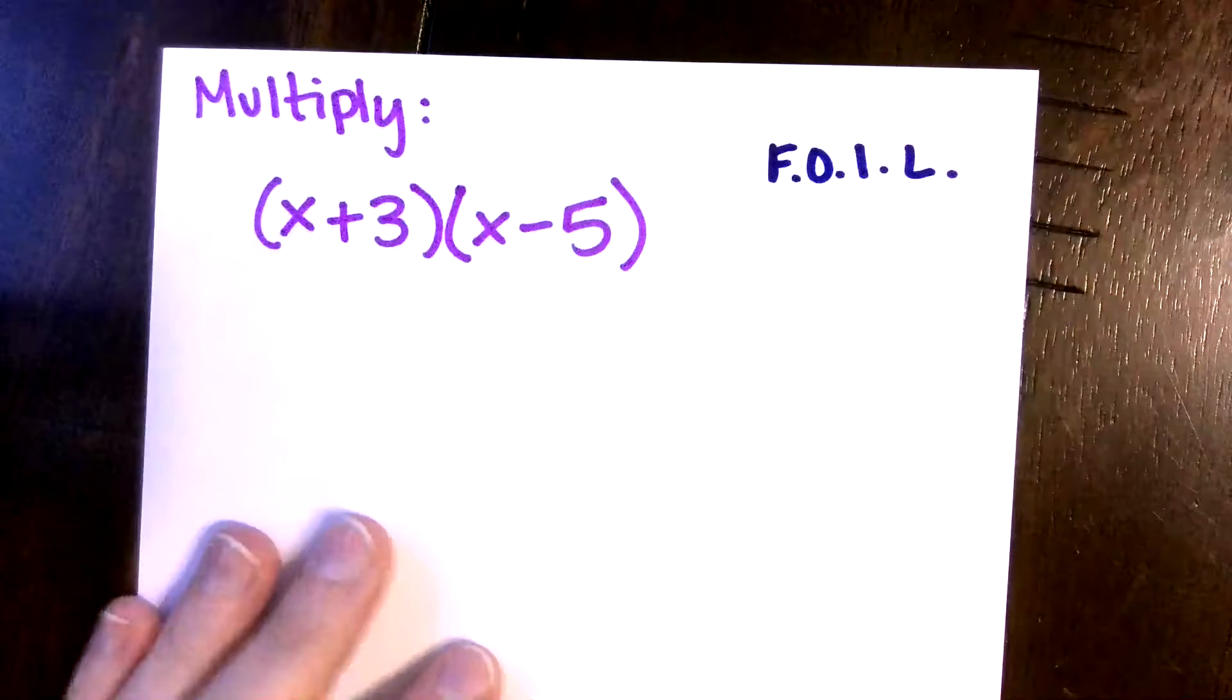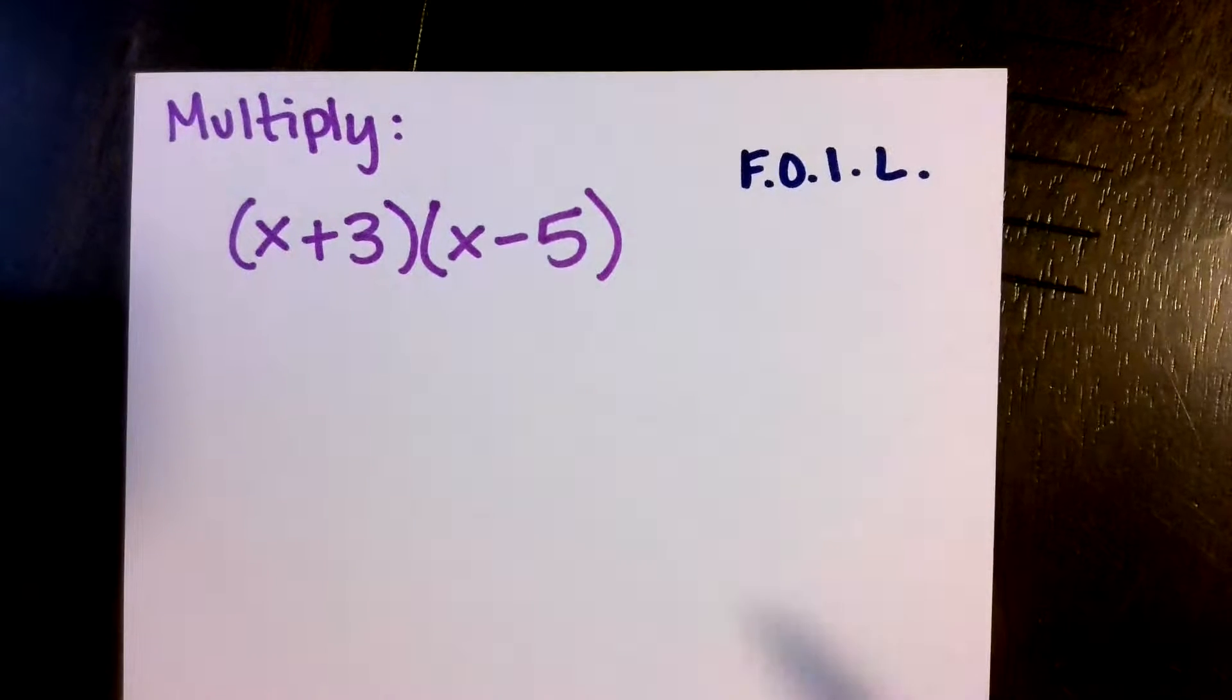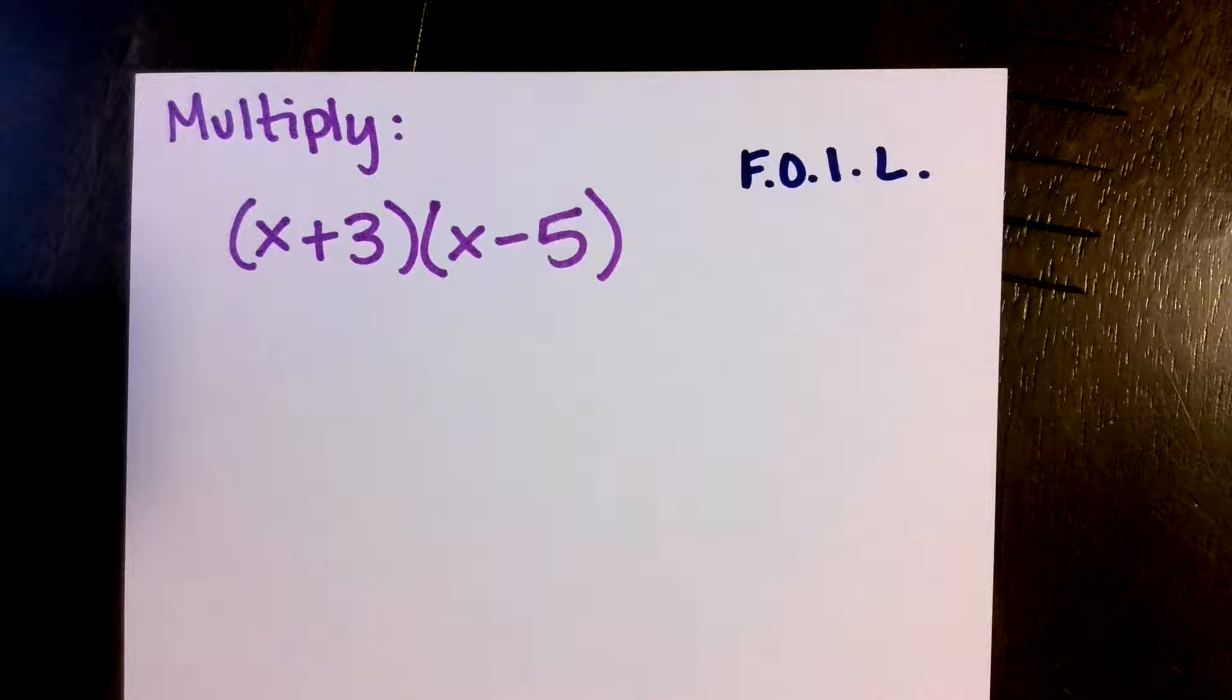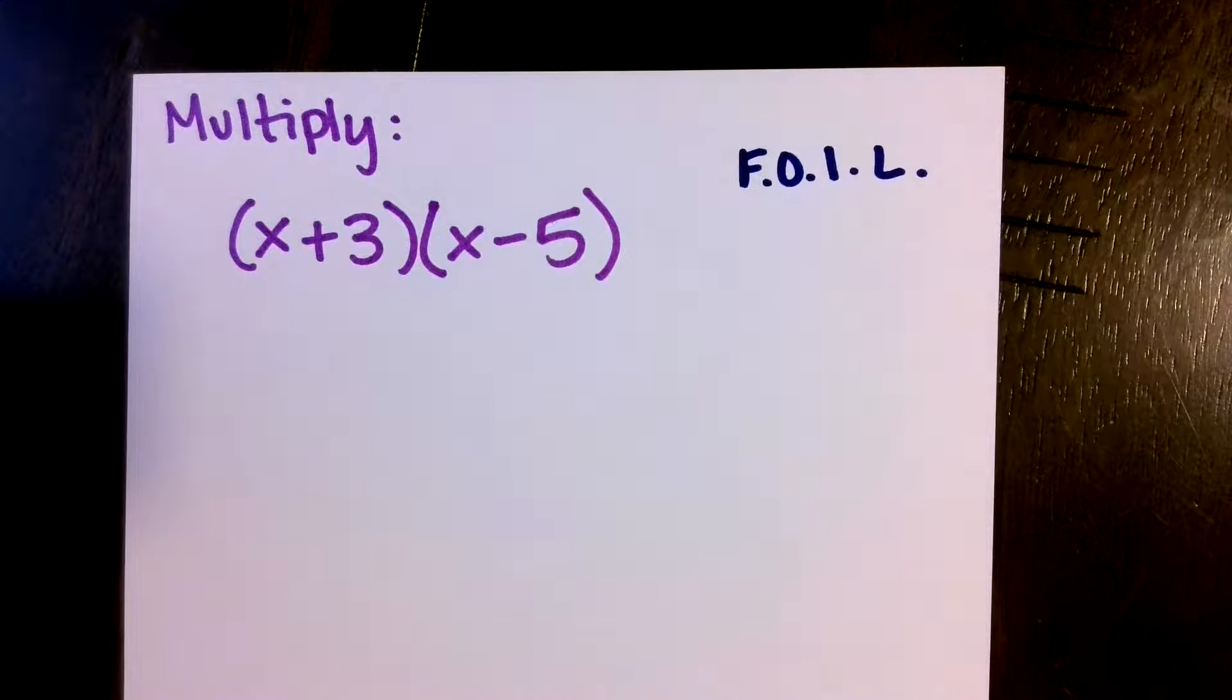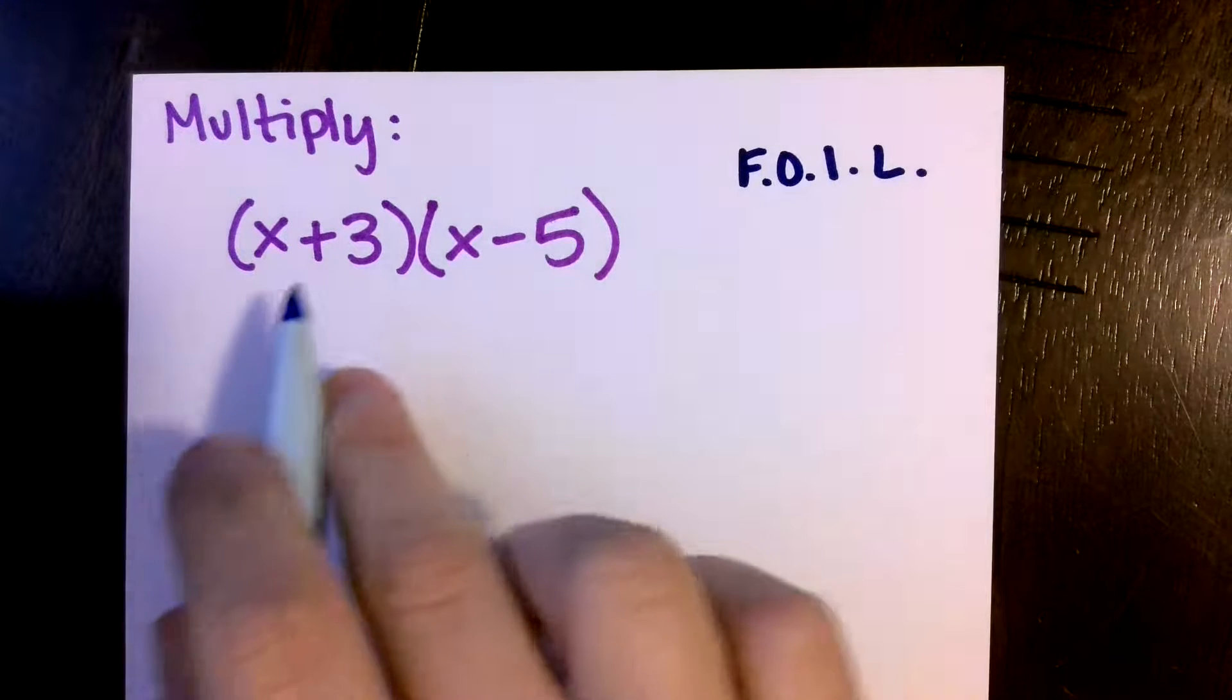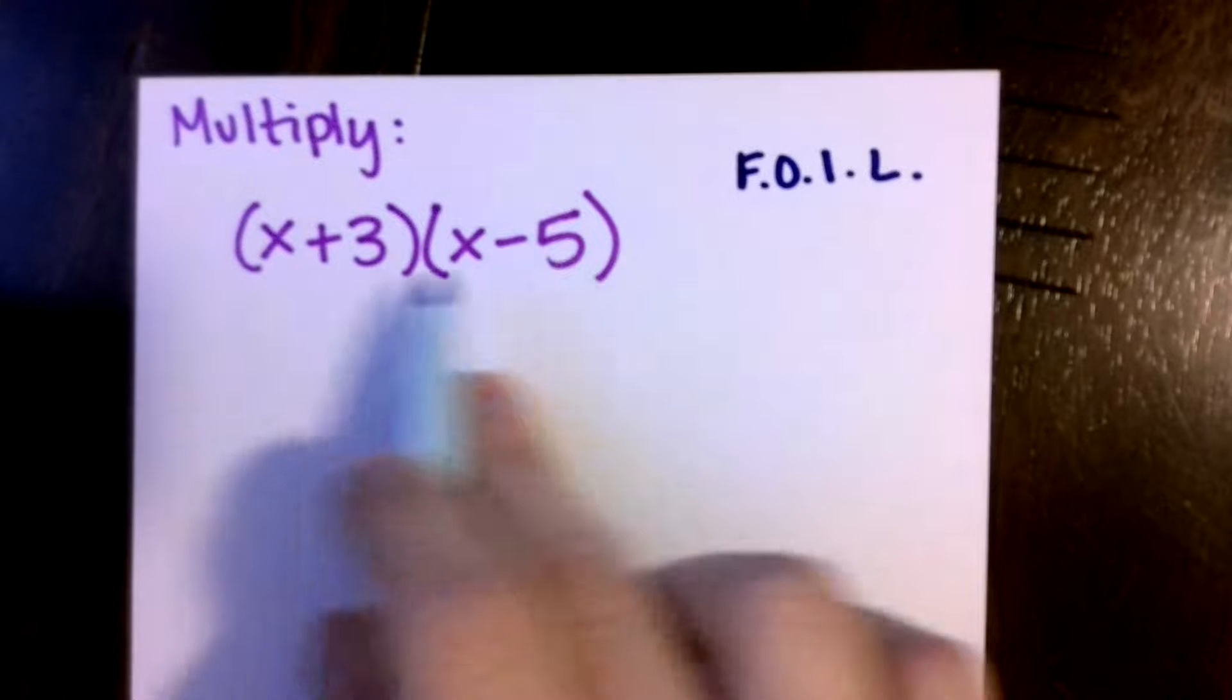In order to talk factoring, I do think it helps to first talk about multiplying, because really factoring is the reverse of multiplication. We're trying to come up with what two factors would multiply to be that polynomial. So remembering that if we're multiplying two binomials like this, where they each have two terms, we would use the FOIL method.